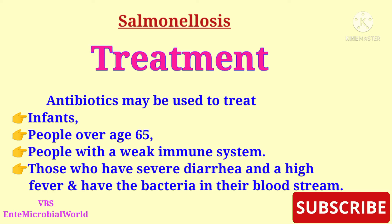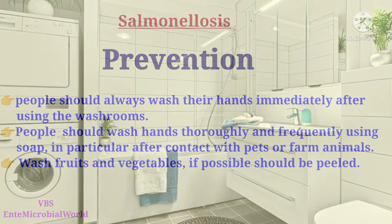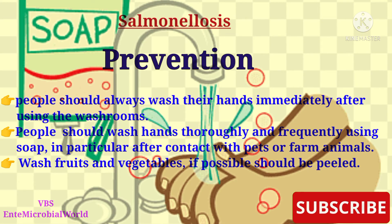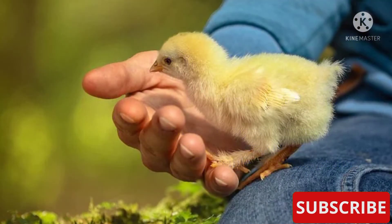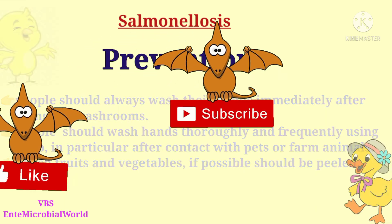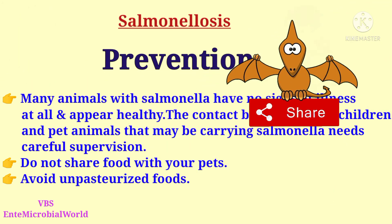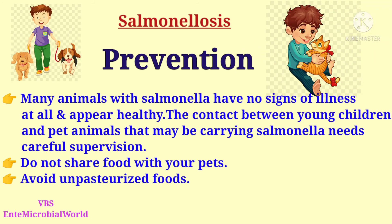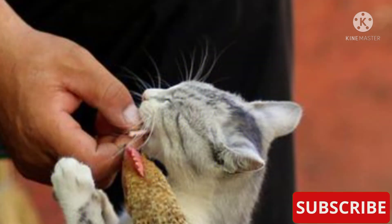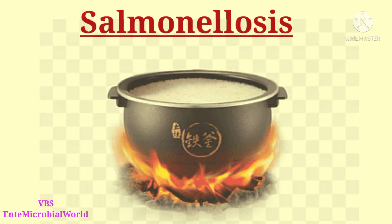People should always wash their hands immediately after using the washroom, and wash thoroughly and frequently using soap, particularly after contact with pets or farm animals. Wash fruits and vegetables carefully and peel if possible. Many animals with salmonella have no signs of illness and appear healthy, so contact between young children and pet animals such as chicks, ducklings, cats, and dogs needs careful supervision. Do not share food with your pets and avoid unpasteurized foods.